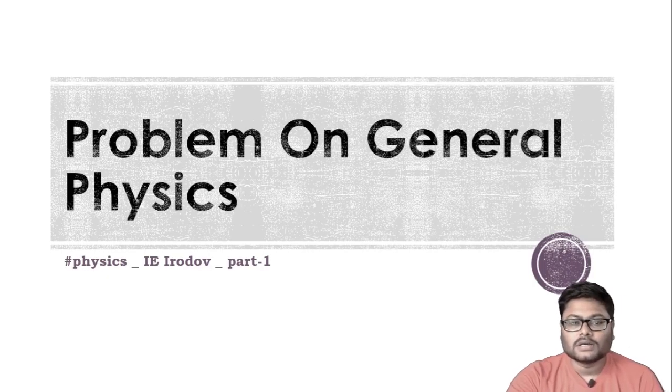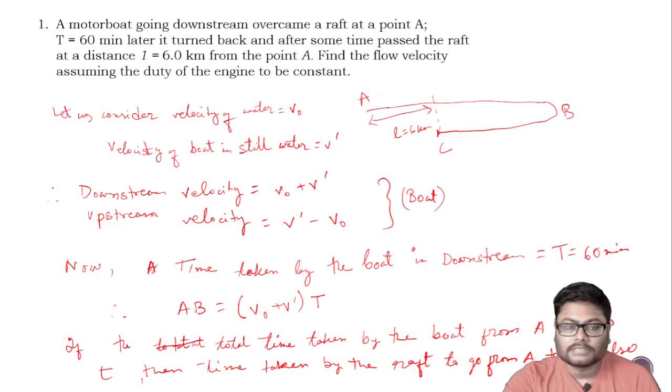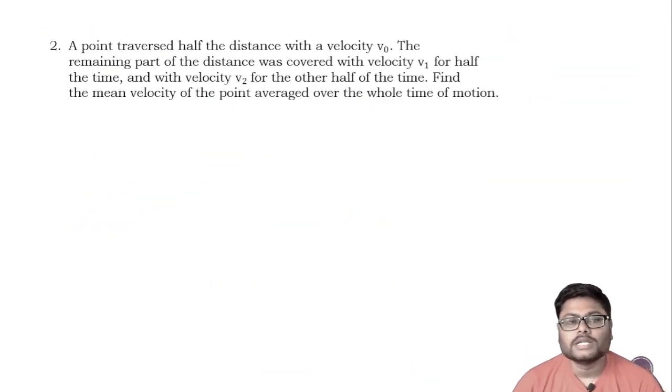Problem on physics zero drop. We have started the kinematics. The first problem has already been solved. Next, come to the second problem. A point traverses half the distance with velocity v0. The remaining part of the distance was covered with velocity v1 for half the time and with velocity v2 for the other half of the time. Find the mean velocity of the point averaged over the whole time of motion. So let us consider the point.